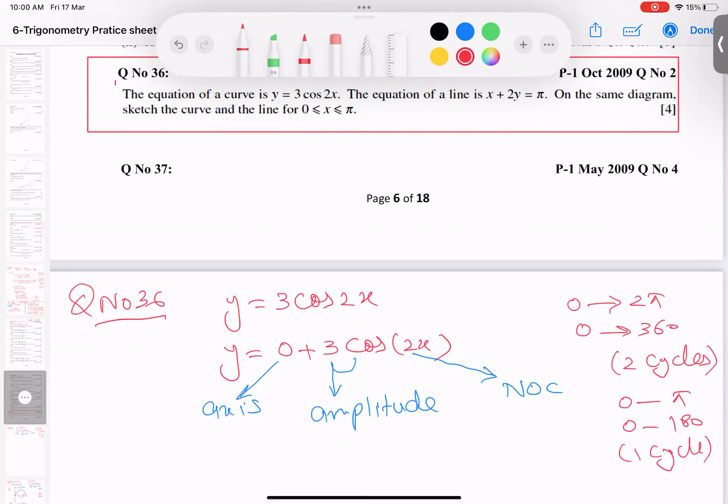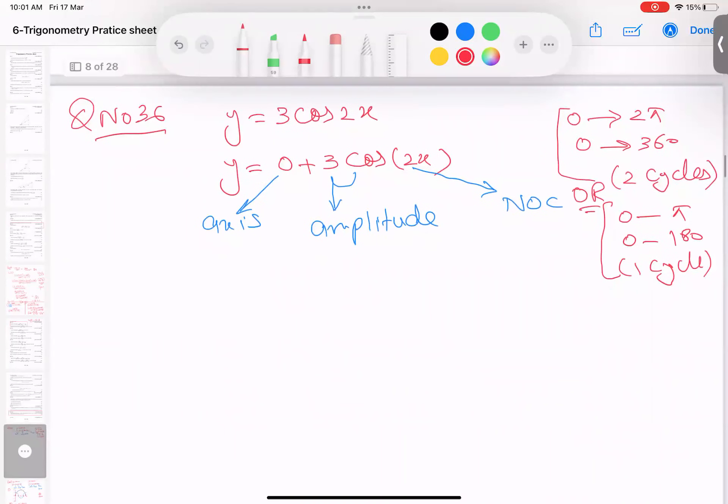Some students don't understand this concept. Then what I do always, I'm writing all here. I make 360 and then rub extra part. Have a look. This is 90, 90 plus 90, and plus 90, and plus 90. The problem is we have to write radian form. So you can write both.